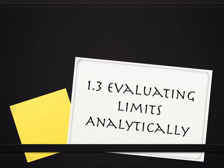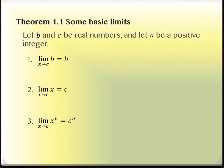We're going to get started with basic limits that occur frequently. We're going to let b and c be real numbers and n be a positive integer. We're finding the limit as x approaches c of the b value, and that is equal to b.